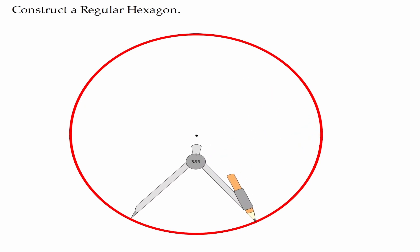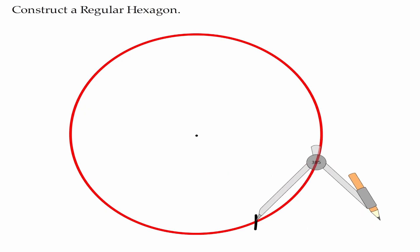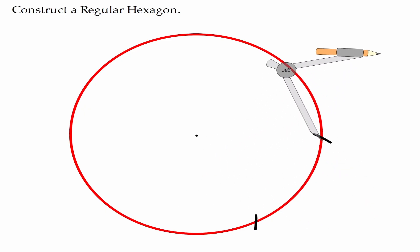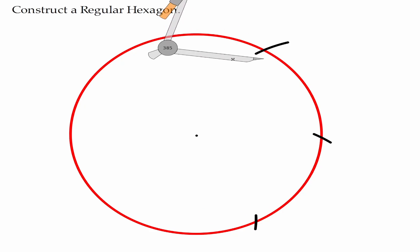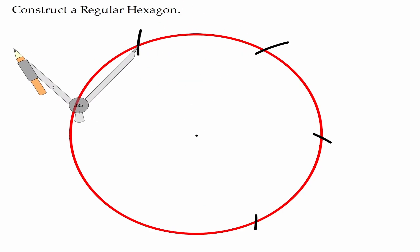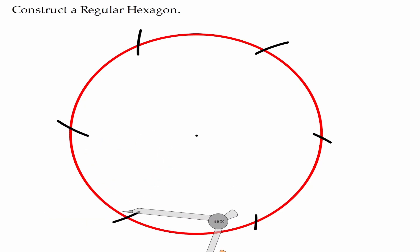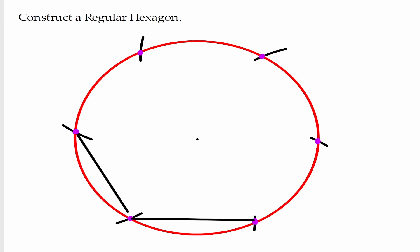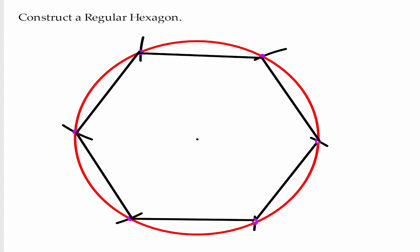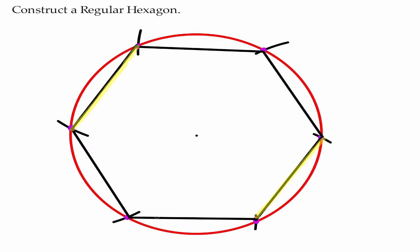Let me go back to my compass and create a mark. Move my compass, make another mark. Move my compass, create another mark. We're going to repeat the same process. Now let's highlight those intersections and connect them. Let's highlight the figure that we have created, and notice that we have constructed a regular hexagon.